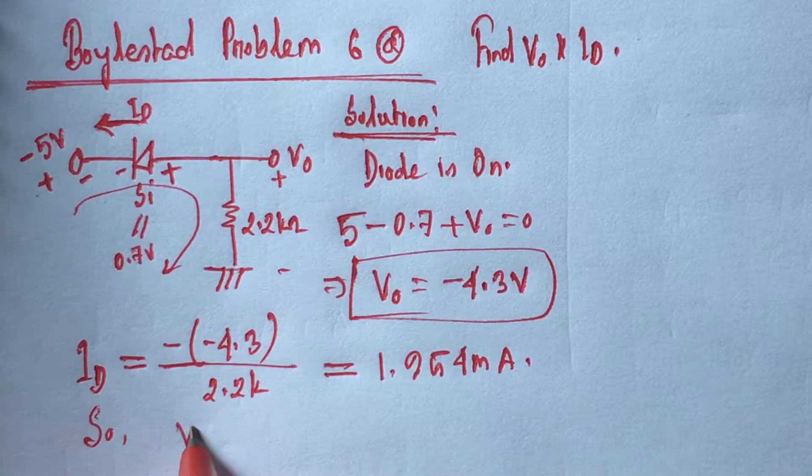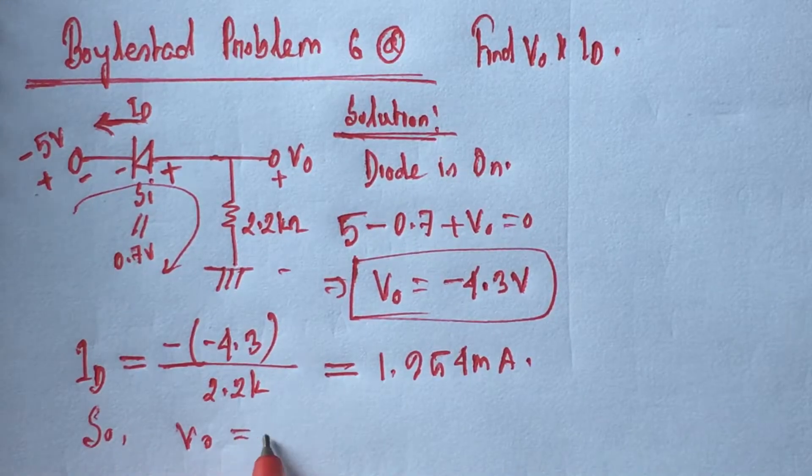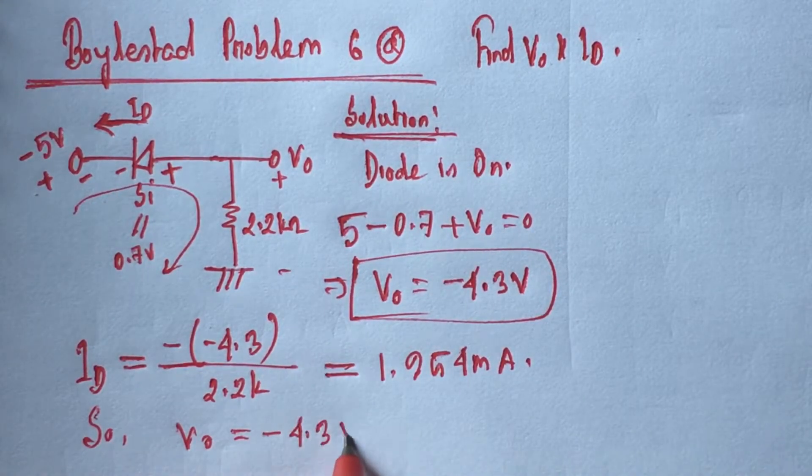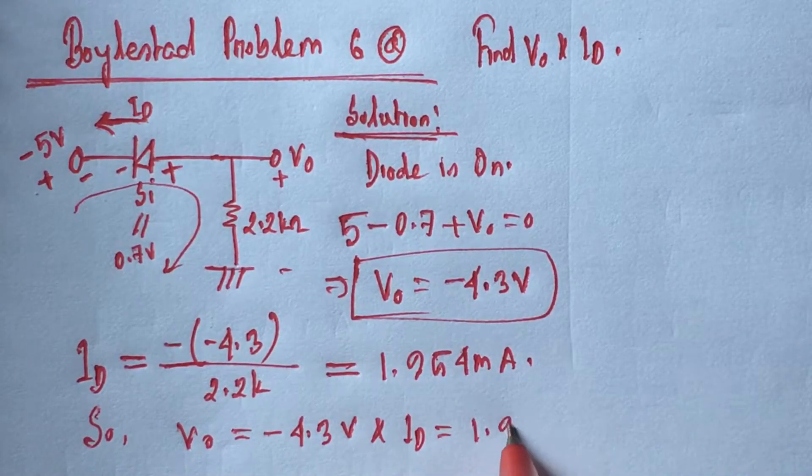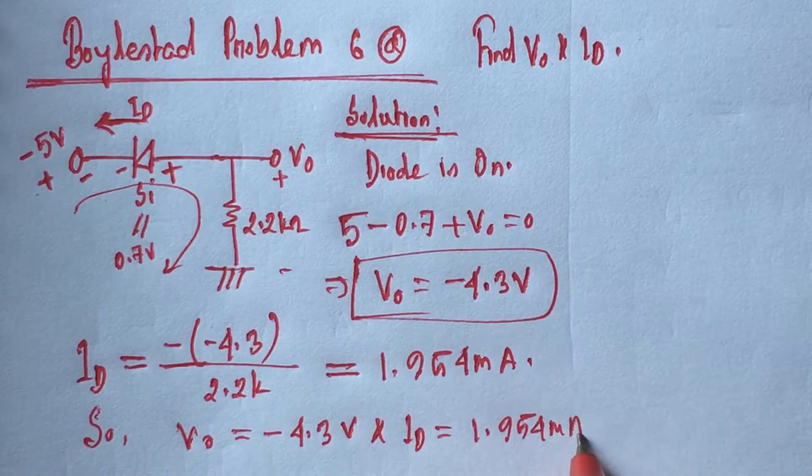So we see that V0 equals minus 4.3 volts and ID equals 1.954 milliamperes.